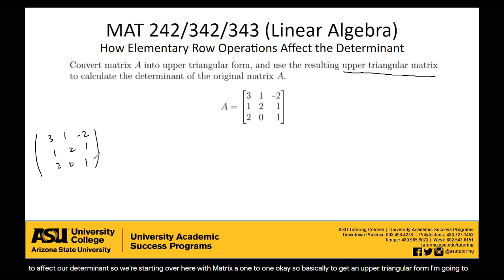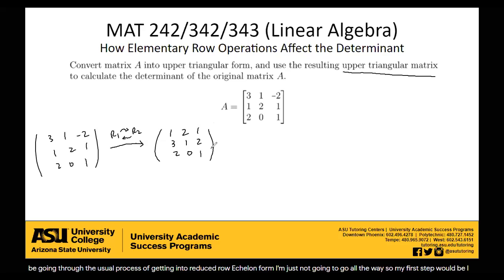Okay, so basically to get it in upper triangular form, I'm going to be going through the usual process of getting it into reduced row echelon form. I'm just not going to go all the way. So my first step would be I want a one in the top left, and I can get that by swapping two rows. So swapping row one with row two. Two, zero, one. Okay, I'll go back through all of these row operations once I'm done and see how it has affected the determinant. So we'll come back to it.